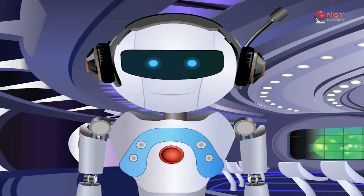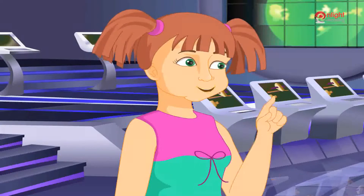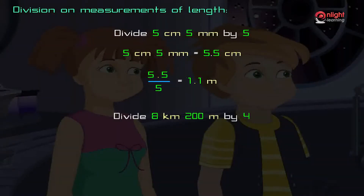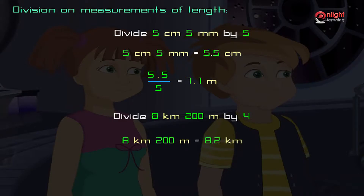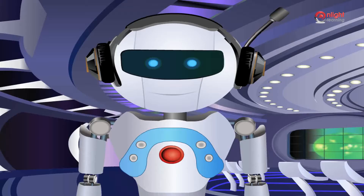Akshara, why don't you divide 8 kilometers 200 meters by 4? Solve by expressing quantities in a common unit. We shall express all the quantities in kilometers. Therefore, 8 kilometers 200 meters is equal to 8.2 kilometers. As all the measurements are expressed using the same units, we can divide them. 8.2 ÷ 4 = 2.05 kilometers.